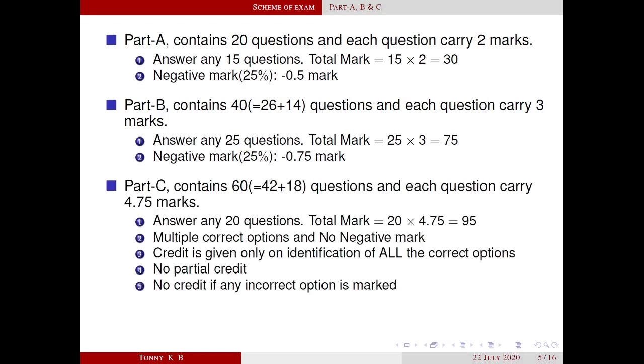Part C contains 60 questions and each question carries 4.75 marks. Out of the 60 questions, around 42 questions are from first three modules. In this part you have to answer maximum 20 questions. So total marks allotted to this part is 95. While answering this part you have to be very careful because this part contains multiple correct options and no negative mark. Credit is given only on identification of all the correct options and no partial credit is given for partial answering.